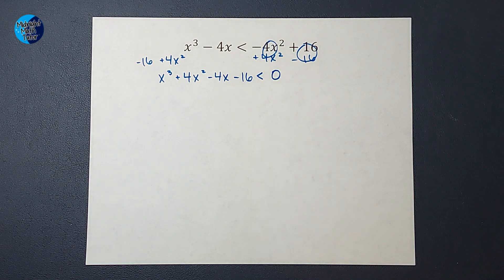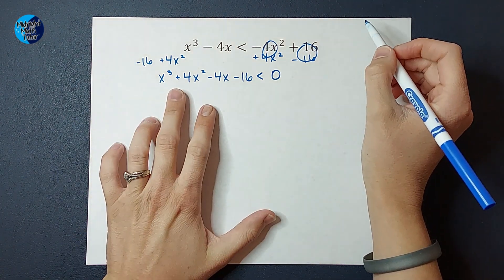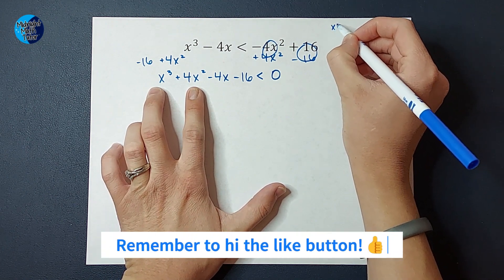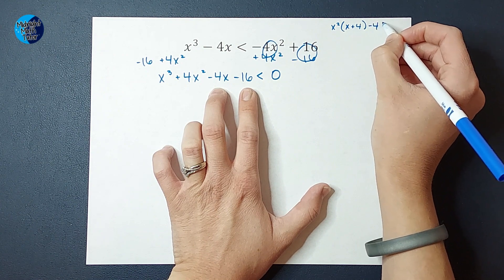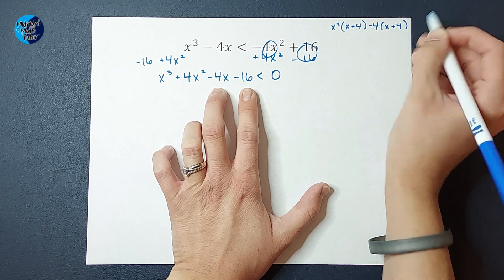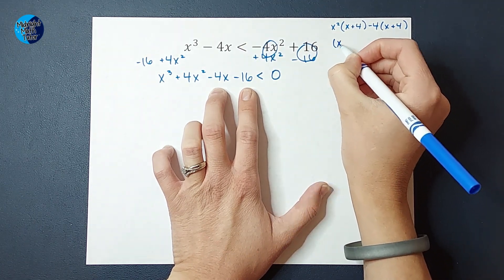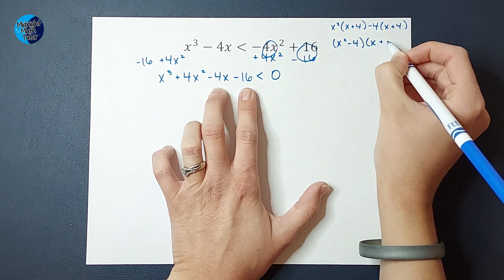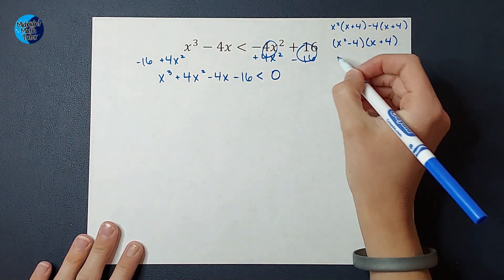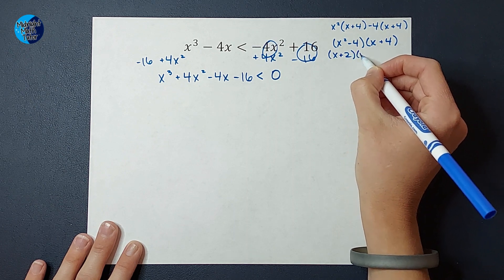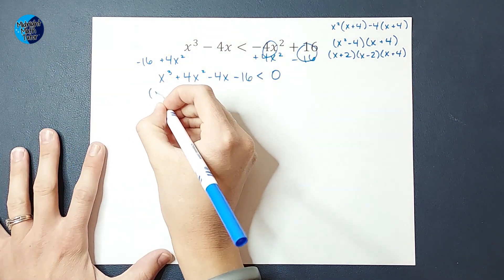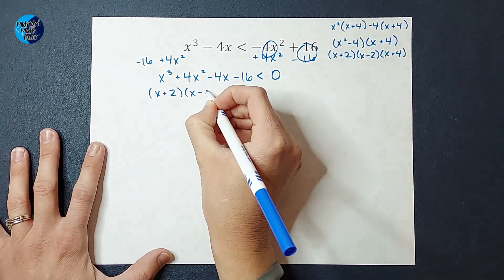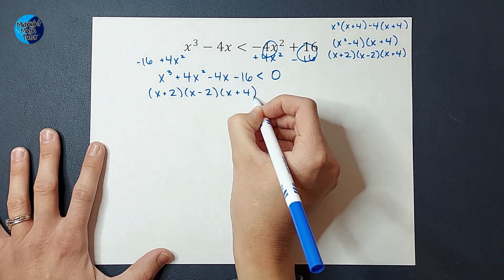The next thing I'm going to do is factor. If you need a factoring review, I'll link one in the corner. I notice I can pull out an X squared from the first two terms, leaving X plus 4. From the last two terms, I can pull out a negative 4, also leaving X plus 4. Then I pull out that X plus 4, leaving X squared minus 4 times X plus 4. That X squared minus 4 is a difference of two squares, so it factors to X plus 2 times X minus 2, and we still have the X plus 4.